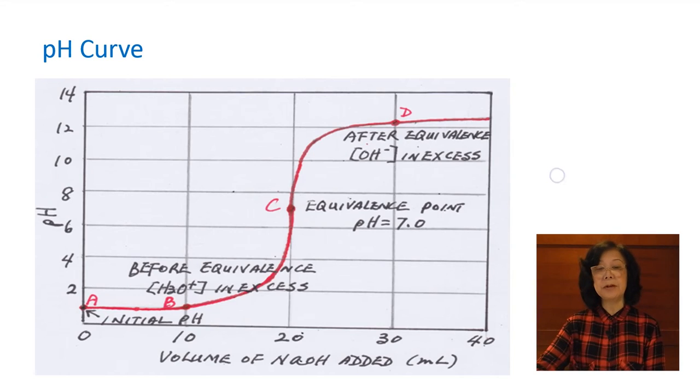Now, let's take a look at the pH curve. This is a plot of pH as a function of volume of NaOH in milliliter added. You see a very smooth curve from point A, B, to C, to D. Notice at point A, this is initially when no NaOH is added, so pH is determined by the complete ionization of the hydrochloric acid.